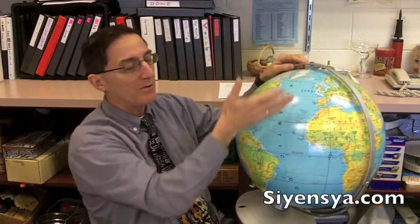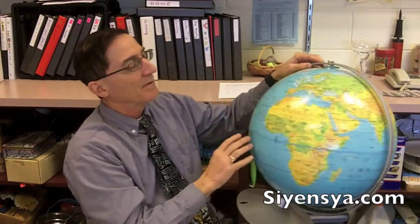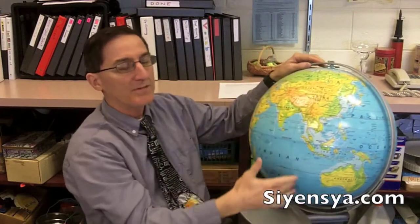And some important things about a globe is that a globe has latitude north and latitude south. Latitude are lines that are parallel that go up to the North Pole and down to the South Pole. Longitude are lines that go from the North to the South.